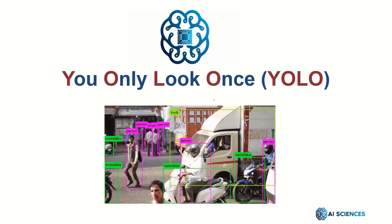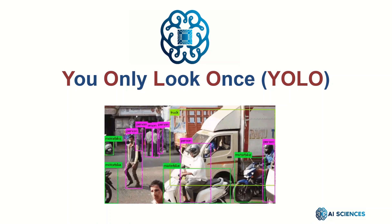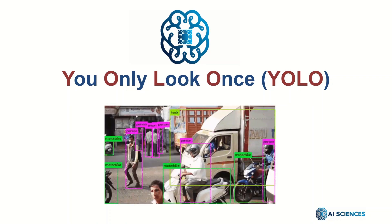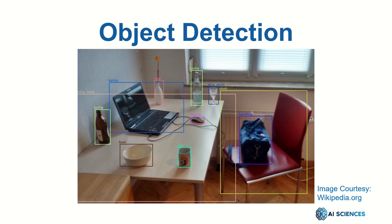Before diving into the details of how YOLO works, let's see what we mean by object detection in general and what the object detection techniques are. Object detection is sometimes also known as object recognition or localization. There are multiple terms that are kind of synonyms, but it is good to differentiate detection versus recognition versus localization. In this particular image, it is detection as well as recognition as well as localization.